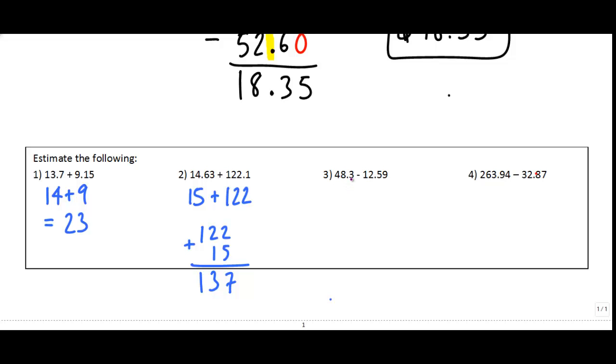Same thing for subtractions. 48.3. I'm going to round off to this 8, and so since it's next to a 0.3, that just stays at 48. And I'm going to subtract 12.59. The next digit's a 5, which means I round up to 13. And I know that 48 minus 13 is equal to 35.